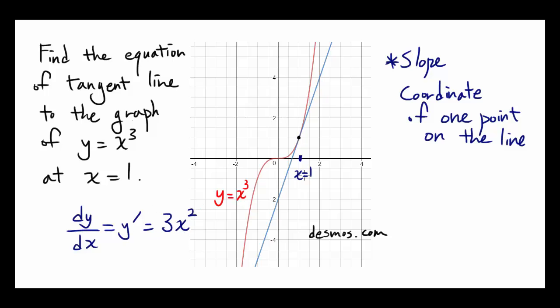So what's the slope at x equals 1? Well at x equals 1, it's going to be 3 times 1 squared, or 3. So you know the slope is 3.